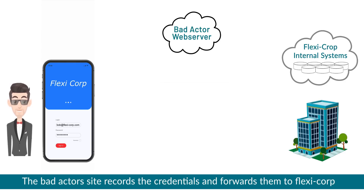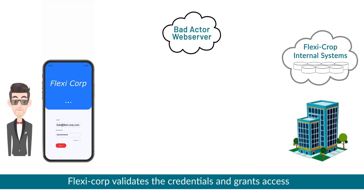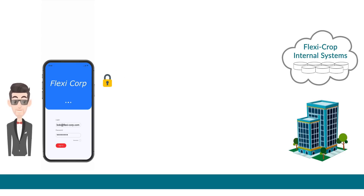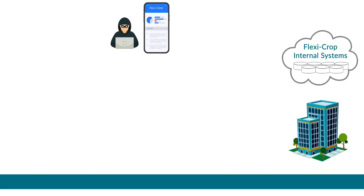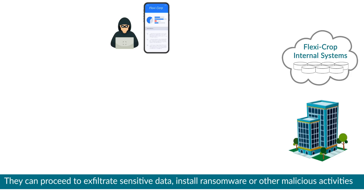Bob enters his credentials, which are sent to the bad actor's site. The bad actor's site records the credentials and forwards them to Flexi Corp. Flexi Corp validates the credentials and grants access. The bad actor gains access and sends a bogus 'maintenance in progress' message to Bob, who assumes there is a temporary problem and goes on about his day.